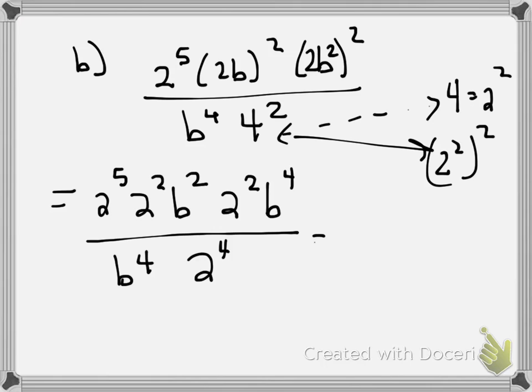Now, at this point, if you want to, I can simplify the numerator, so that's 2 to the 5th plus 2 plus 2, so that's 2 to the 9th, and I have B to the 6th. In the denominator, I have 2 to the 4th and B to the 4th.